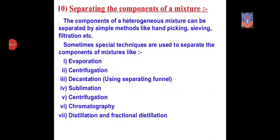Our next topic is separating the components of a mixture. We know that mixture is made up of two or more components. Most natural substances are not chemically pure, so different methods of separation are used to get individual components from a mixture. Simple methods include handpicking, sieving, and filtration.